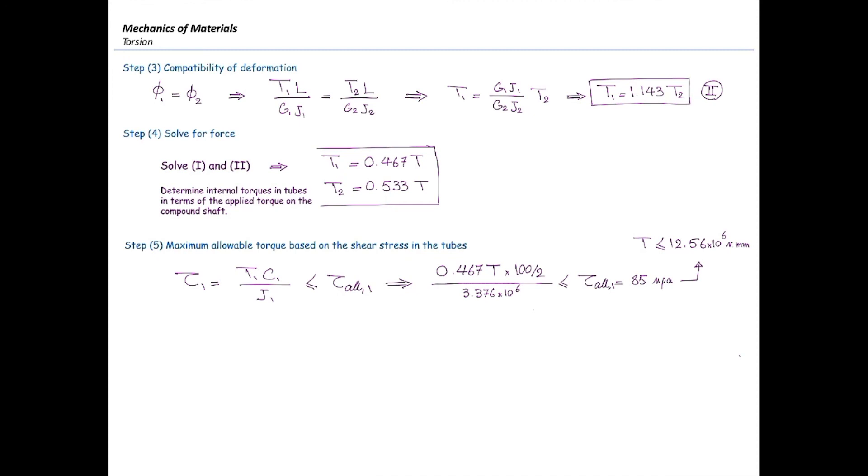This is the maximum torque that tube number one can take, but we are not done yet. We need to check that again for tube number two. Stress in tube number two is Tc over J, and that has to be smaller than the allowable stress. Torque is 0.533 T, multiply that by the external diameter of that tube which is 90 divided by 2, then divide that by J and set that smaller than the allowable stress which is 65 megapascals. Now I would get another torque. I got two numbers. Which one is going to be the right answer for this problem? The smaller one, because that is going to fail sooner.